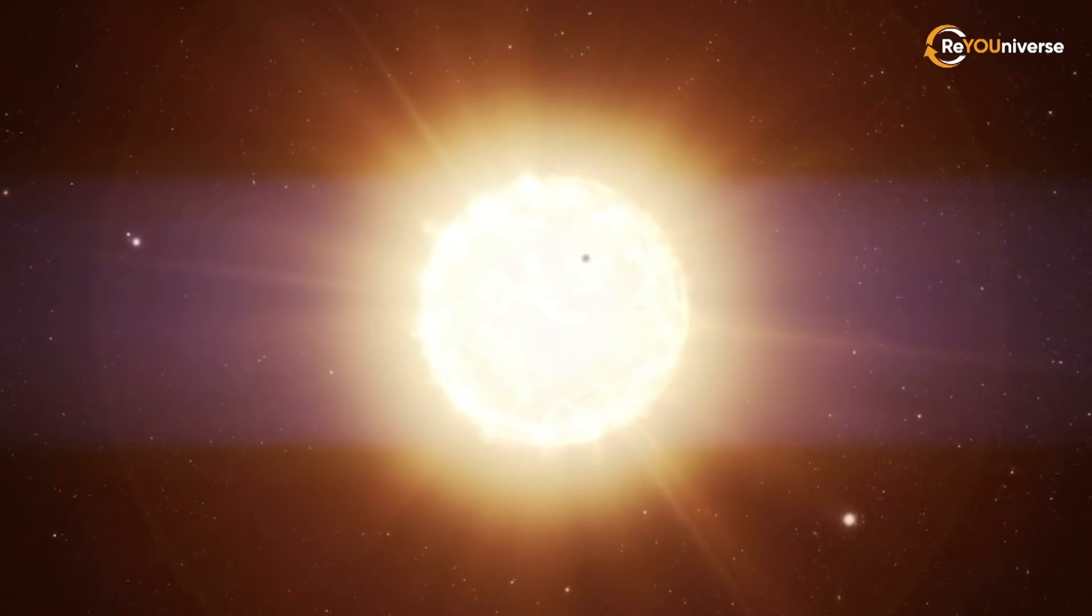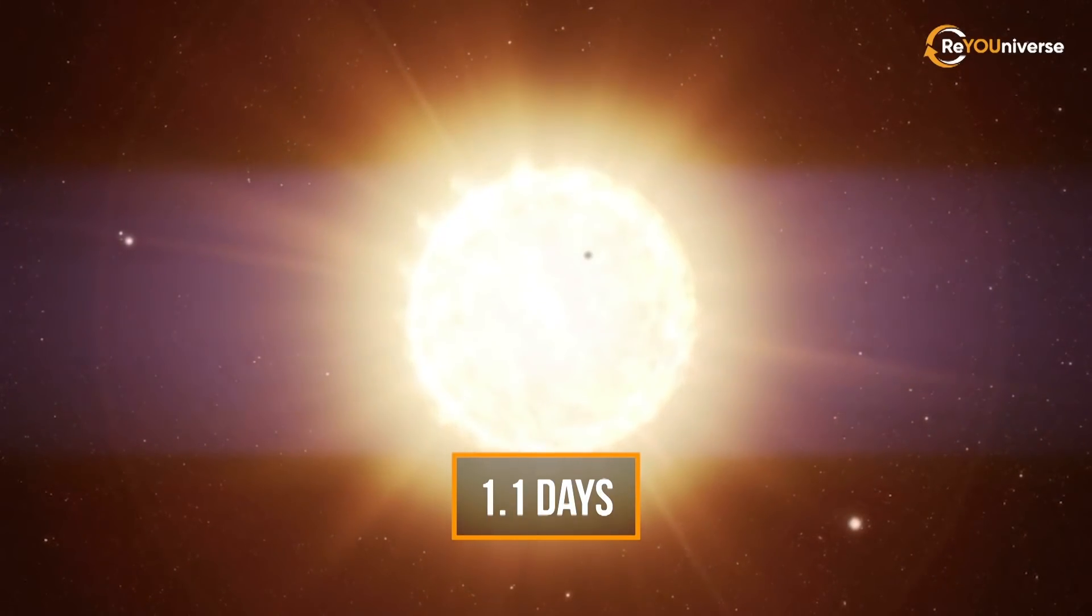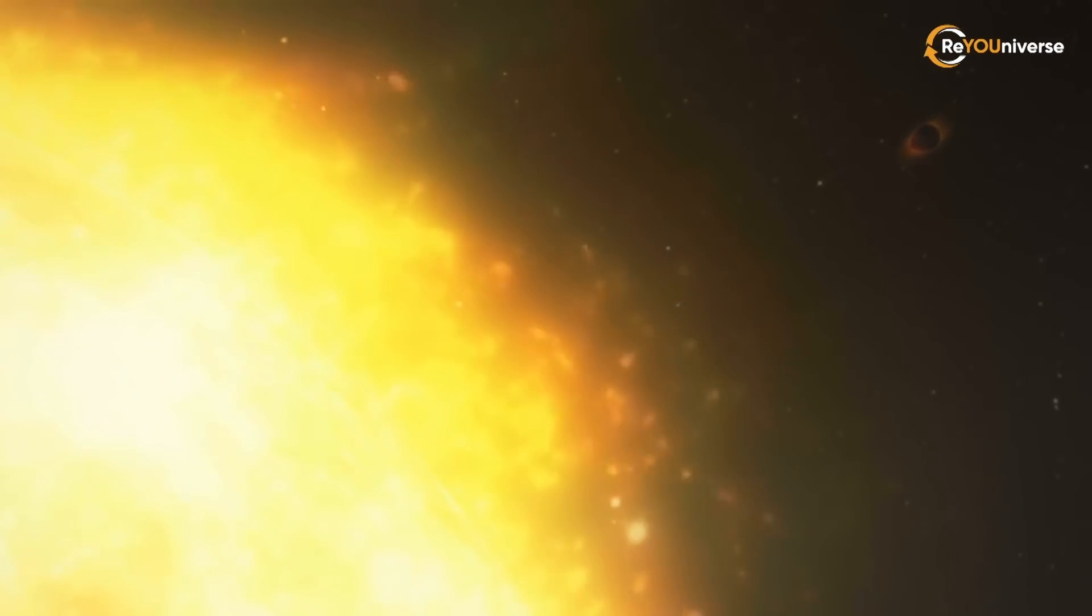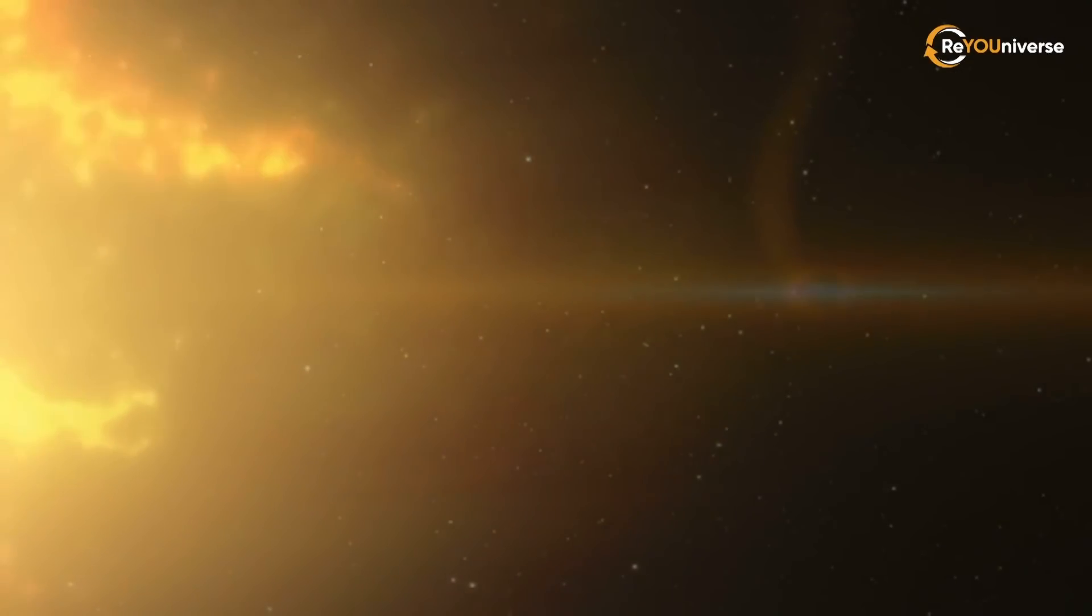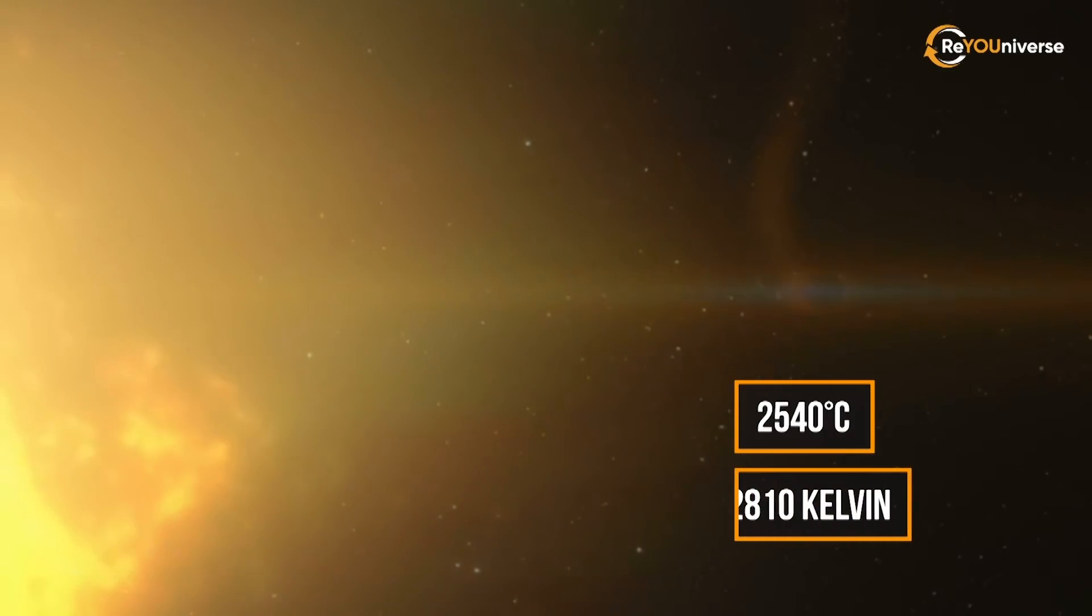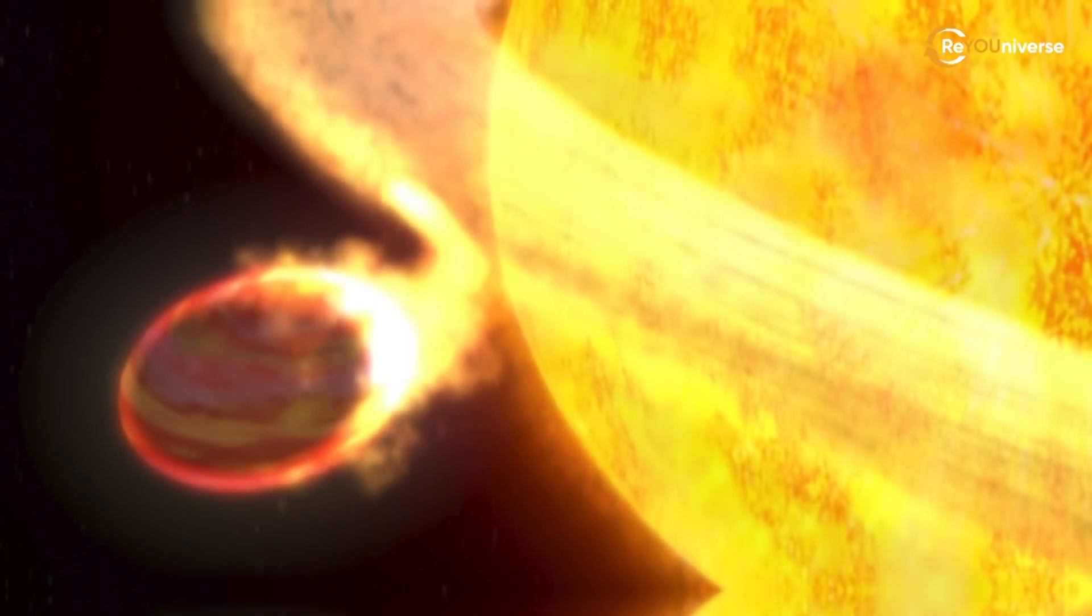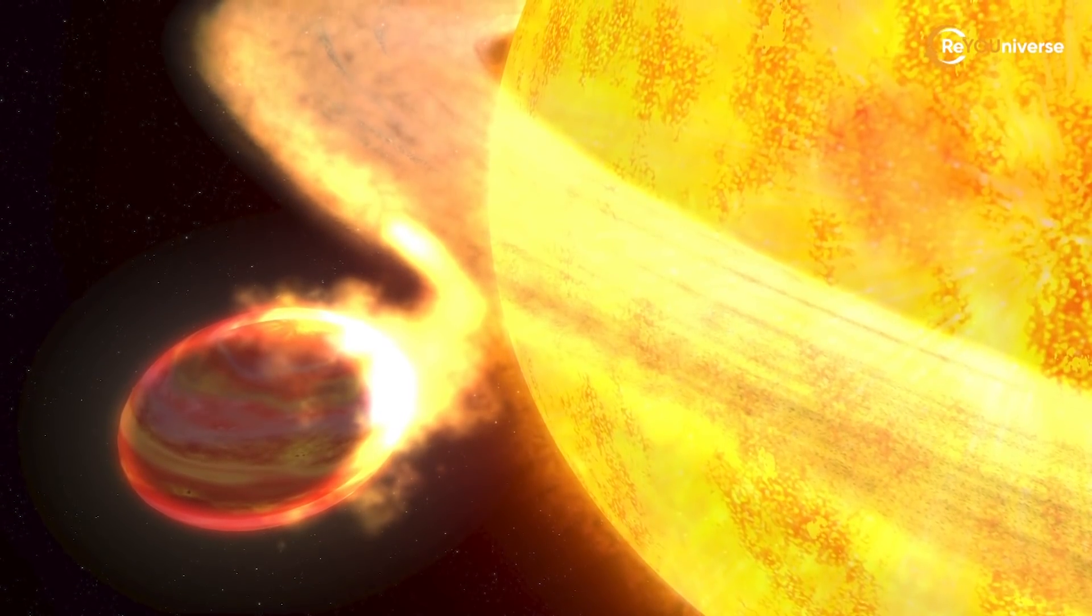With an orbital period of just 1.1 days, WASP-12b is so close to its parent star that daytime temperatures reach 2,540 degrees Celsius, or 2,810 Kelvin. Its atmosphere swells up to three times the radius of Jupiter and spills matter onto its star.